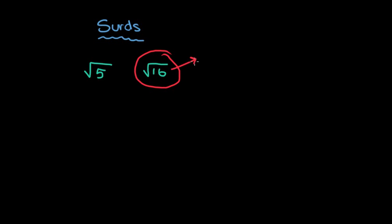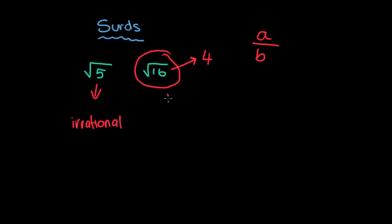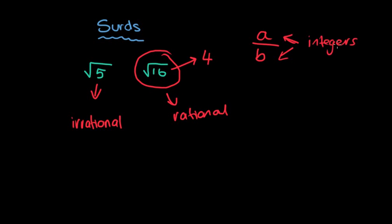The reason for this is because we can simplify the square root of 16 to be 4. The official definition of a SIRD is that it is an irrational number, as opposed to a rational number. A rational number is where you can write it as a fraction A over B, where both numbers are integers — that is, positive and negative whole numbers including zero.